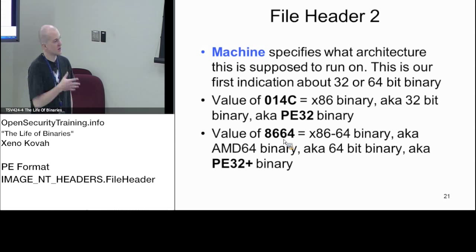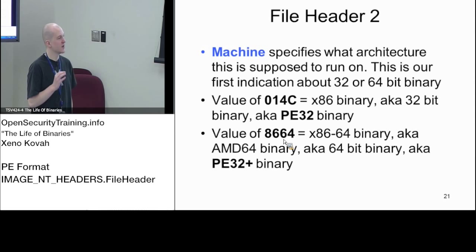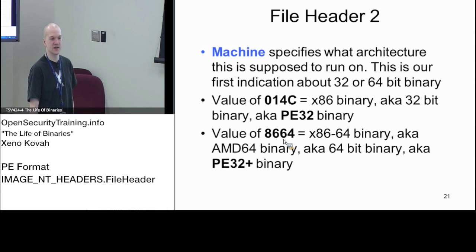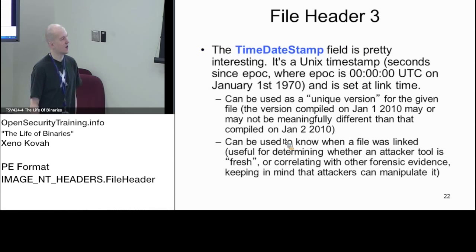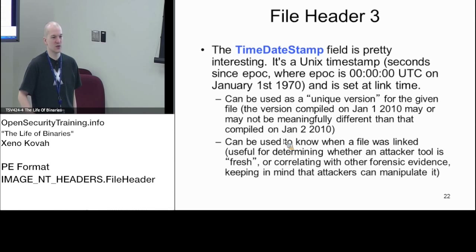The machine field in the file header is the first thing that gives us some indication of 32 or 64-bit, but what it's really trying to say is that this indicates what architecture the binary is supposed to be running on. Time-date stamp is a pretty interesting field - it is a typical Unix seconds-since-epoch value. Epoch is January 1st, 1970, and it's saying how many seconds have elapsed since 1970.